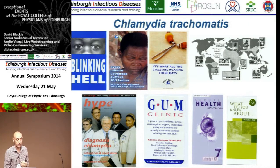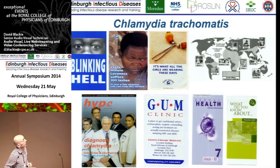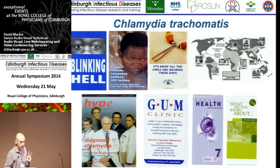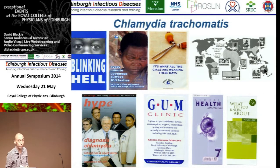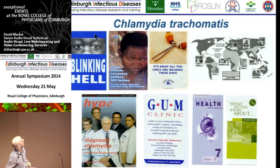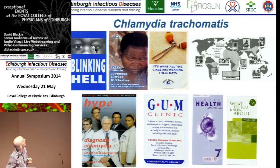Chlamydia trachomatis is the most common human infection. Most people will be familiar with the sexually transmitted disease, but the same organism — in a slightly different form — is also the single most common cause of preventable blindness in the world. The incidence tends to be in sub-Saharan Africa, Asia, South America, and also in the desert regions of Australia where water is at a premium. It's an ocular infection.